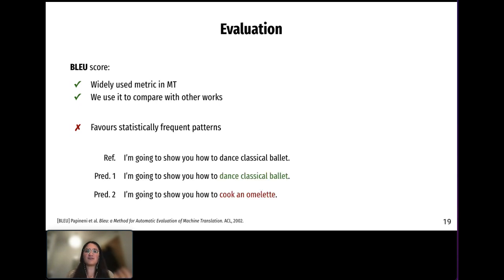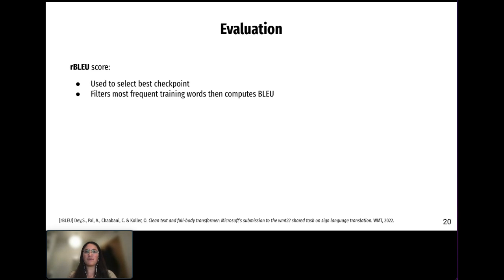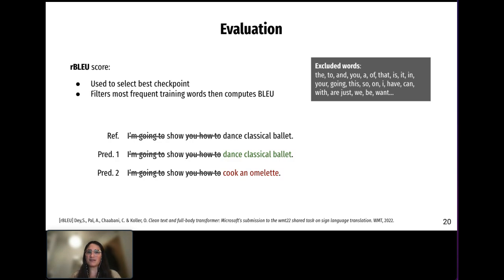However, since our dataset contains instructional videos, patterns such as 'I'm going to show you how to' appear frequently. When this happens, BLEU score is inflated, so this means that it's still high even if the meaning of the sentence has changed completely. To solve this issue, and inspired by the work from the machine translation workshop, we introduce reduced BLEU to keep the best checkpoints. This proposed metric consists of removing certain words from the reference and prediction before computing BLEU score. To do so, we create a blacklist of excluded words that are frequently seen in the training data but don't contribute much to the meaning of the sentence. Therefore, we achieve a higher correlation between reduced BLEU and meaningful translations.